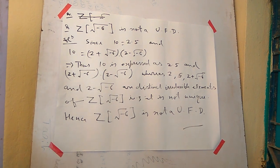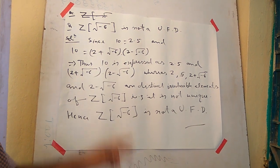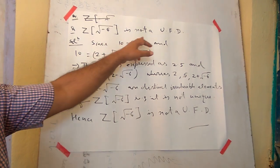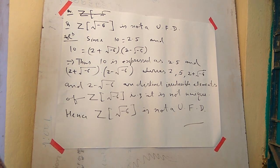Let us discuss another question which is a very important one. Z[√-6] is not a UFD. UFD means unique factorization domain. Let us see its solution.